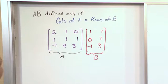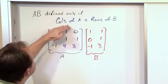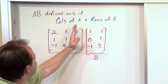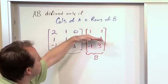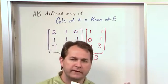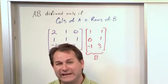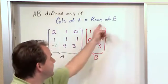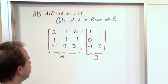Now first of all, notice that the columns of A, we have 3 columns of A, and the rows of B, 3 rows of B are equal. So because the columns of the first matrix are equal to the rows of the second matrix, that allows the multiplication to proceed.